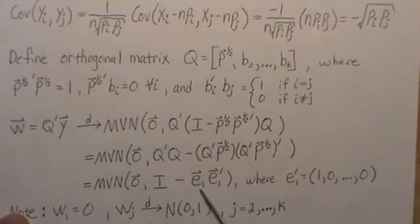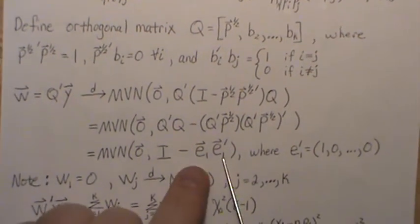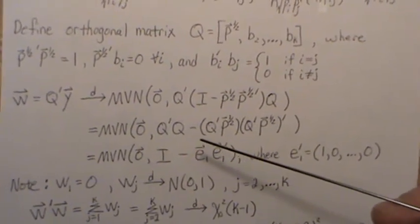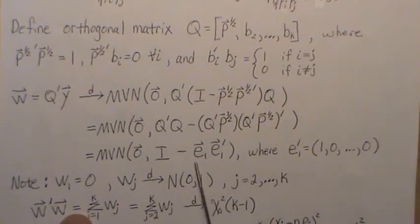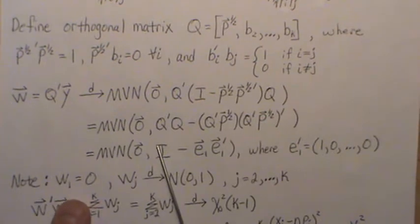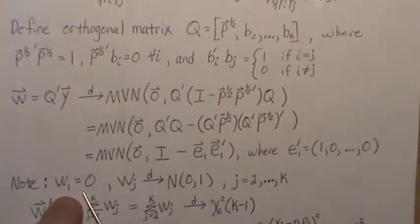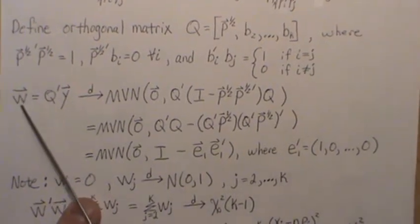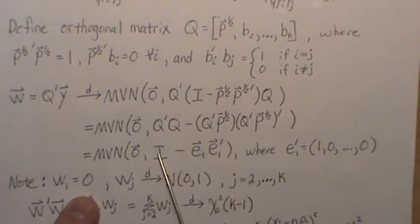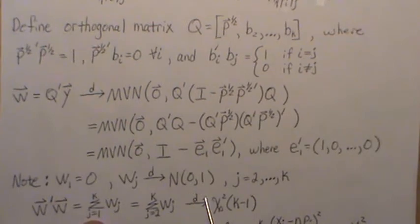So the variance-covariance matrix of W is I minus e1*e1^T, which is the identity matrix with the top-left entry replaced by zero. This means W1 has mean zero and variance zero — it is identically zero, not a random variable. All other components W_j, for j = 2 to k, each limit in distribution to a standard normal distribution, since the remaining diagonal entries are all ones and the off-diagonals are zero.